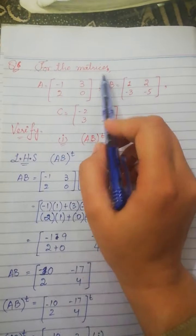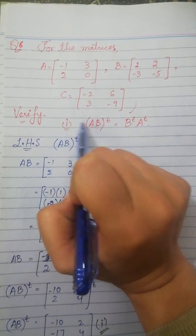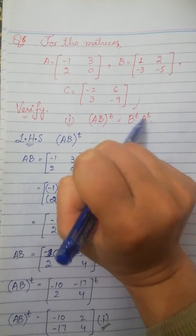Let's look at question number 6. For the matrices A, B, and C, verify that (AB) transpose is equal to B transpose times A transpose.